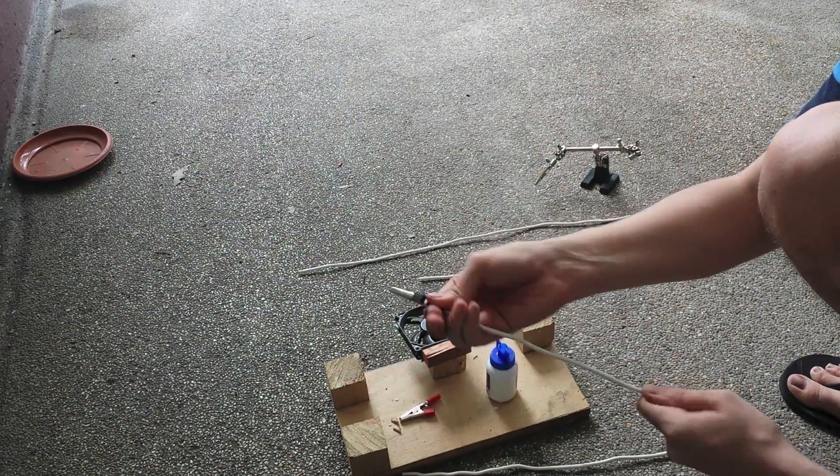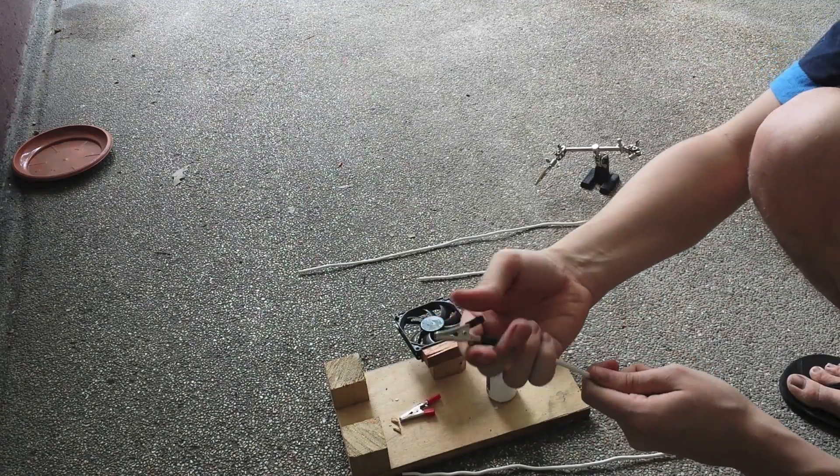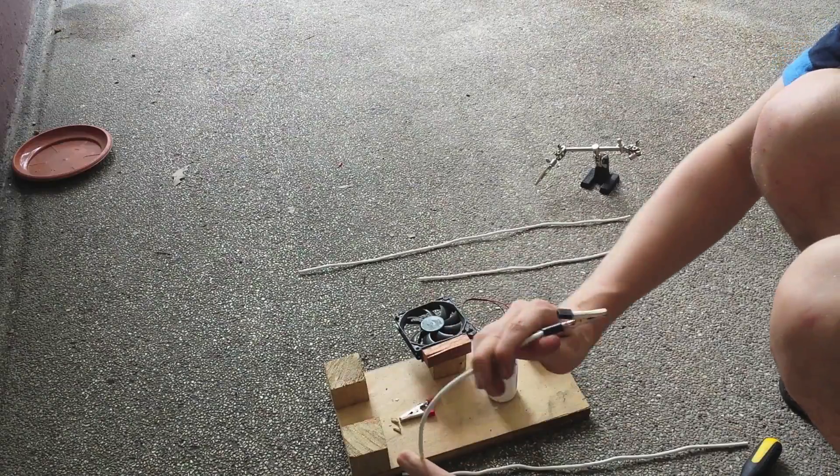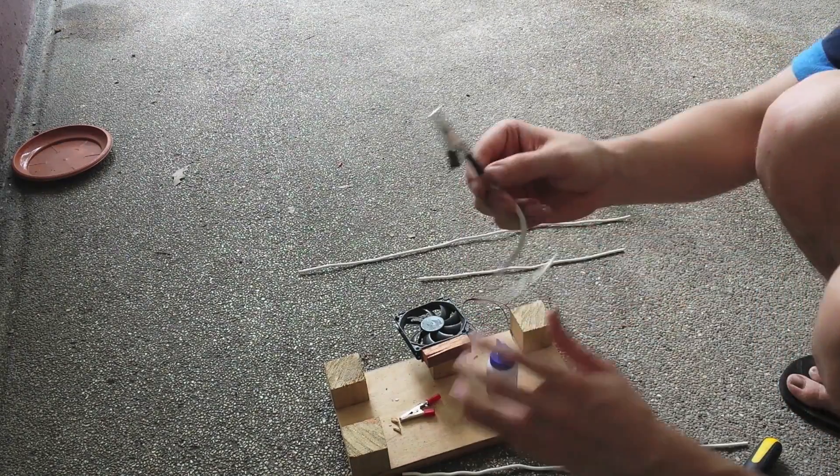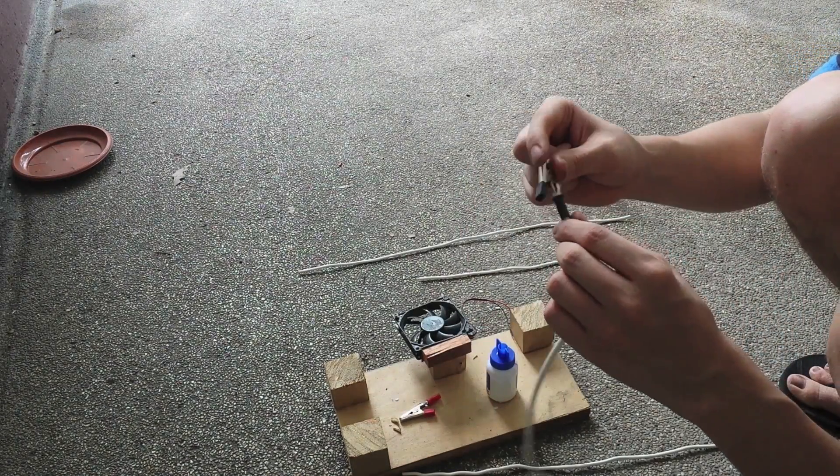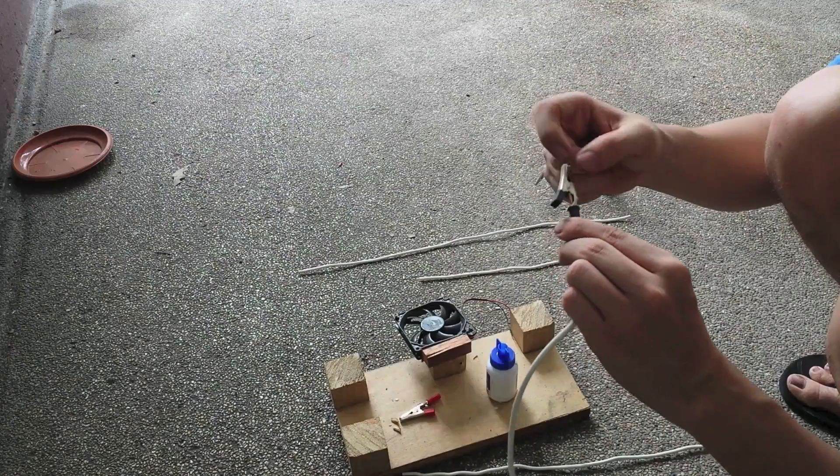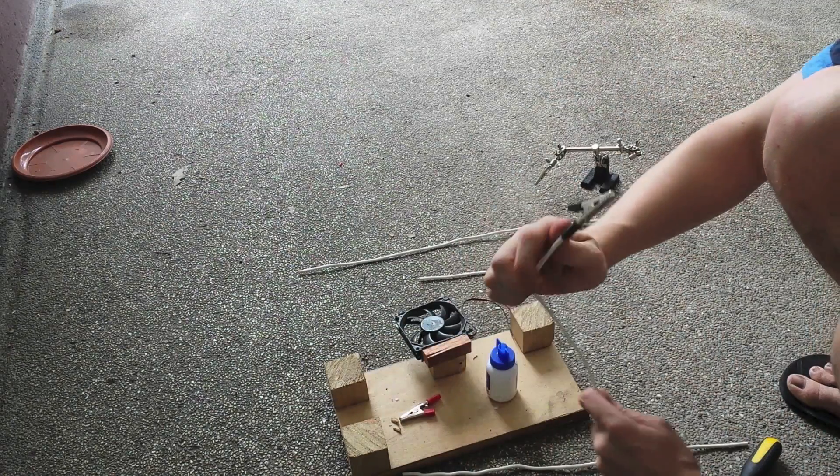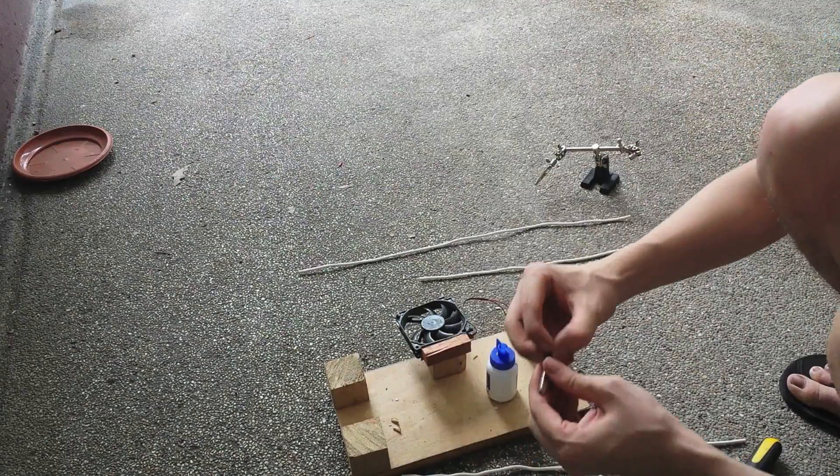There you go - you've got one really sturdy crocodile clip. What I might do later is solder that, so if I ever apply heat to this it's going to act as a heat sink through the solid core wire. Let's do the other one.